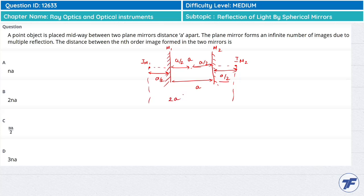Using the same logic, you can see the nth image will be at distance 2na. So the correct option is 2na.